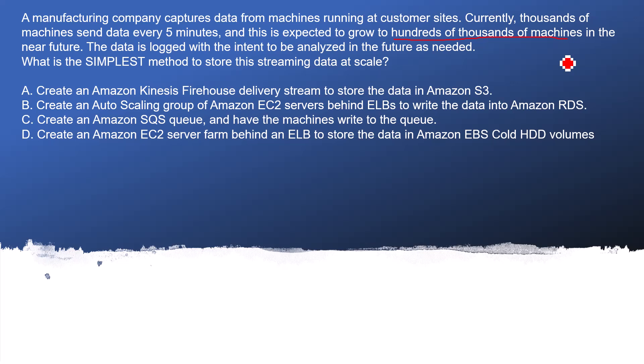The data is logged with the intent to be analyzed in the future as needed. This is the hint that whatever data is coming, we are just going to store it — we need to log the data and later on analyze it. During streaming we do not need to analyze incoming data, we just need to store it. The question asks: what is the simplest method to store streaming data at scale?